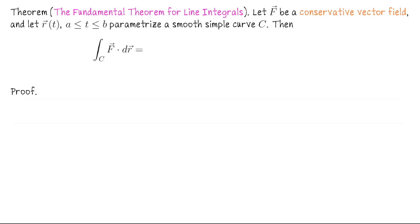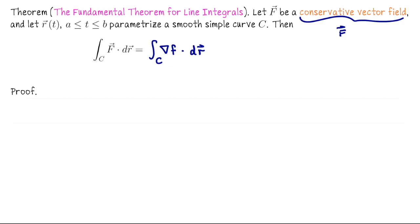It says if F is a conservative vector field and r(t), for t values going from a to b, parametrizes some smooth simple curve C, then if I want to compute the vector line integral of F along C, I can rewrite that as the vector line integral of the gradient of the potential function little f along C. Since F is a conservative vector field, there's a family of potential functions whose gradients produce F.